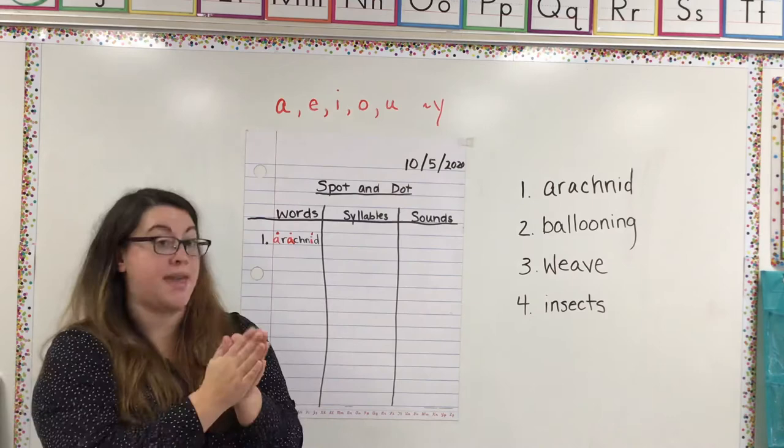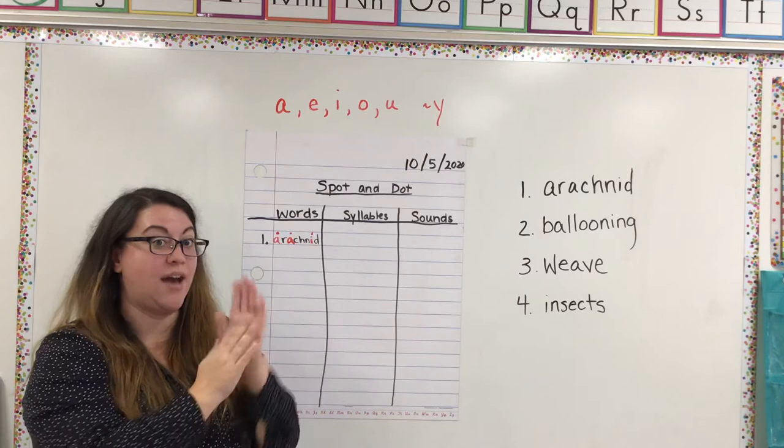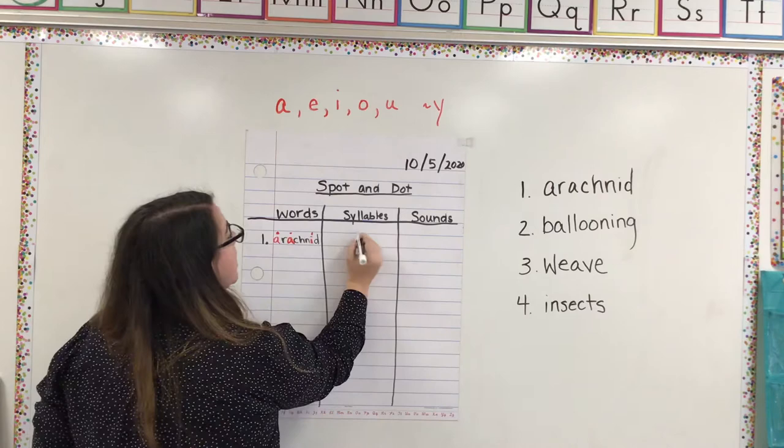So, the next thing we're going to do is figure out how many syllables are in this word. So I want you to clap with me, because this is good practice. Arachnid. So I counted three. So I'm going to go over here to syllables, and I'm going to write three.